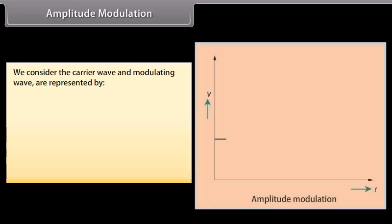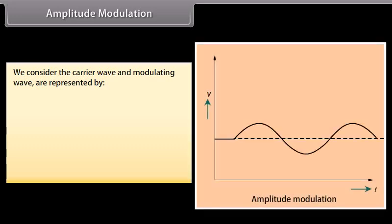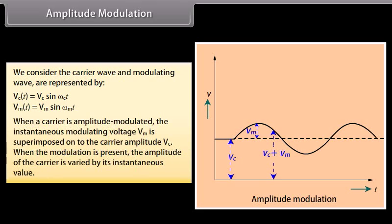We consider the carrier wave and modulating wave represented by: VC(t) = VC sin(ωct) and VM(t) = VM sin(ωmt).